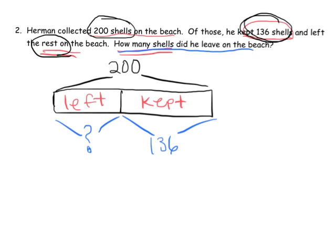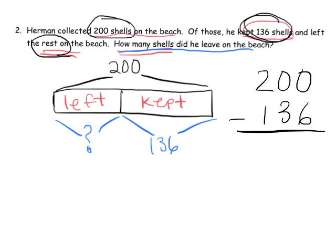So we're going to do 200 minus 136, and I'm just going to do the standard algorithm on this one. The directions did not say we had to draw a tape diagram, but I would highly recommend helping students understand this is a part-part-whole model tape diagram. We want to use tape diagrams as often as we can because it really helps students understand why we're subtracting — rather than just thinking 'I must be subtracting because I'm in the subtracting chapter.' We want the reason for subtraction to make sense.